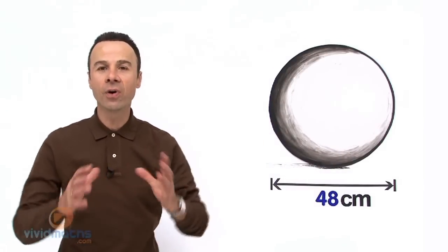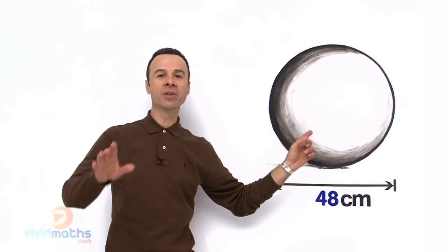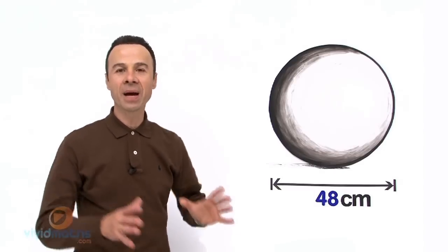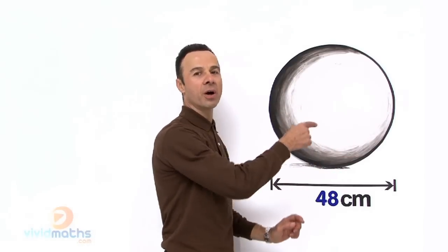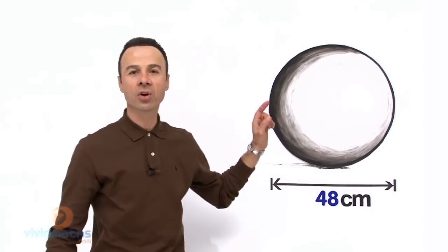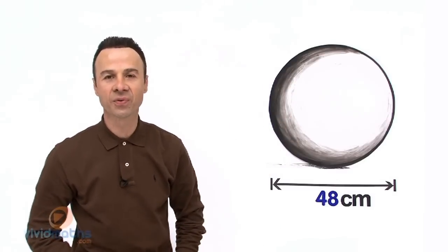We are working out the volume of this sphere. Now remember the definition of volume: the amount of space occupied by the solid. That is what we are looking for, the contents inside this sphere.